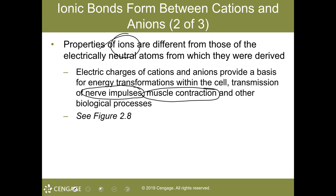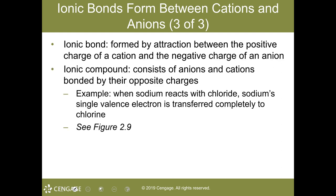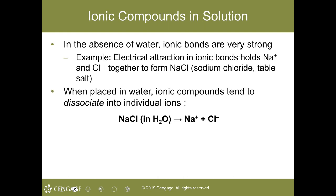Without calcium ions, contraction would never occur. Now to the ionic bond: ionic bonding occurs when you have a bond between the positive charge of a cation and the negative charge of an anion. That ionic compound consists of both anions and cations bonded by the opposite charge. In this example, sodium will react with chloride — it's all because of sodium's single valence electron being transferred to chlorine.